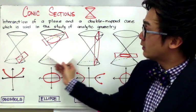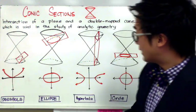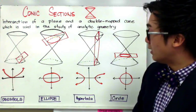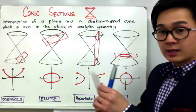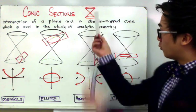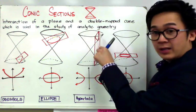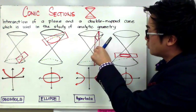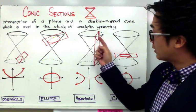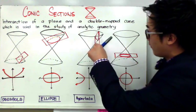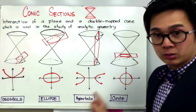This is our second conic section for this lesson. The hyperbola, on the other hand — if you have this cone right here and this is your plane, and it went through the cone like this, it will create two parabola-like figures, and these two forms are what we call the hyperbola.